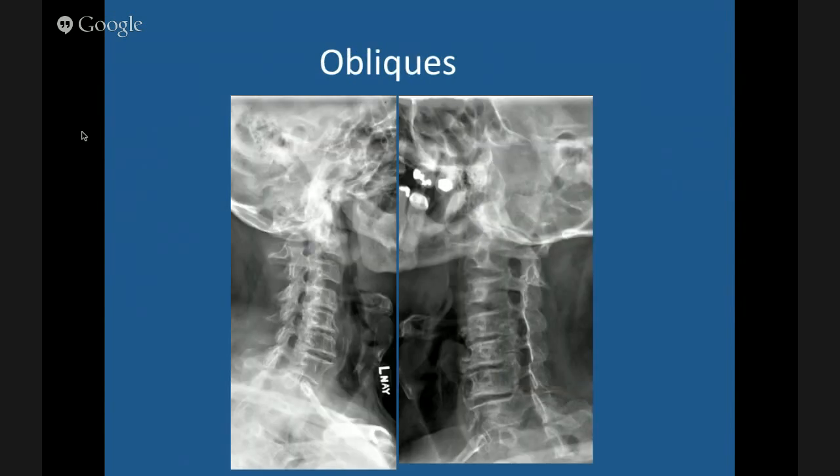For the oblique views, if you look at this film labeled 'left' — it's actually the left side of the patient. If you do the film AP and rotate, it's actually the right cervical foramen you're looking at.